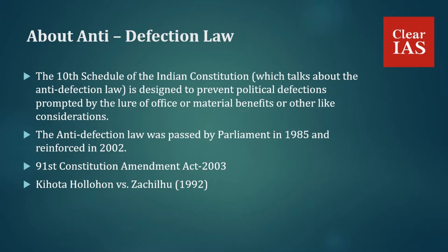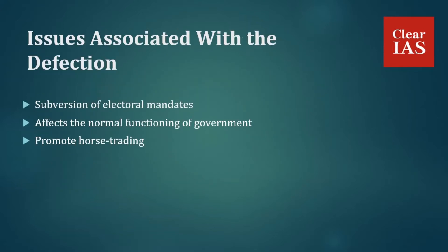Now, the issues associated with defection. First is subversion of electoral mandates — defection is a subversion of electoral mandates by elected leaders who get elected on the ticket of one party but then find it convenient to shift to another due to the lure of ministerial berths or financial gains. Second, it affects the normal functioning of government. The infamous 'Aaya Ram Gaya Ram' slogan was coined against the background of continuous defections by legislators in the 1960s.